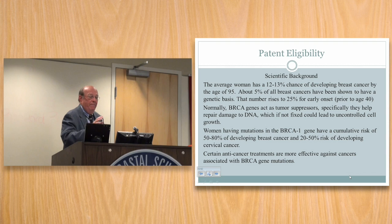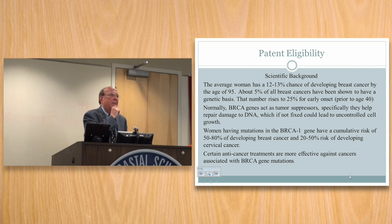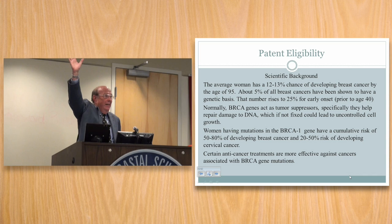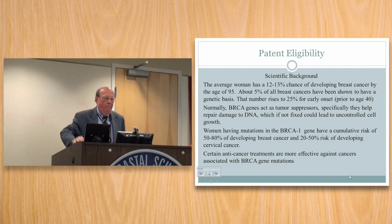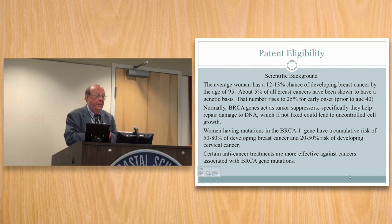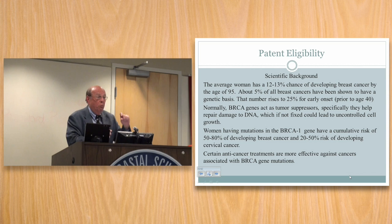Here's a little science — don't panic. How many of you have a level of biology knowledge at the college freshman level? The average woman has a 12 to 13% chance of developing breast cancer by age 95. About 5% of breast cancers have been shown to have some genetic basis as opposed to environmental. That number rises to 25% when we talk about early-onset breast cancers, which are before the age of 40.